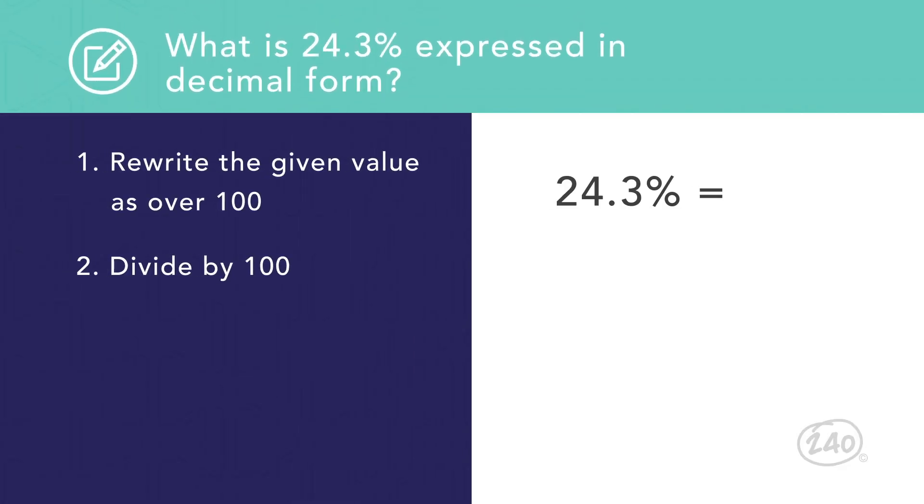Let's try another one. How can twenty four point three percent be written in decimal form? Again, we start by rewriting the percentage as a fraction with a denominator of one hundred. In this case, we get twenty four point three over one hundred.